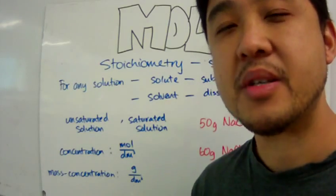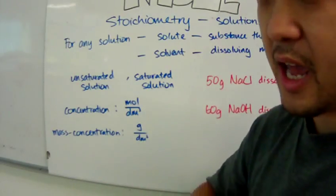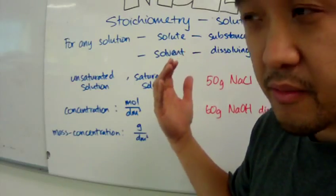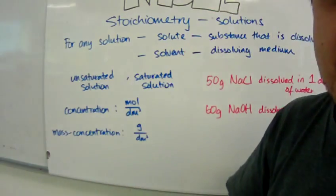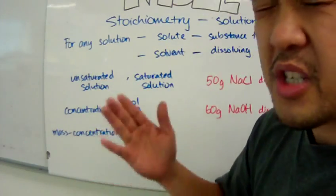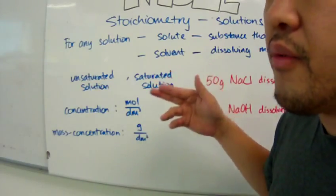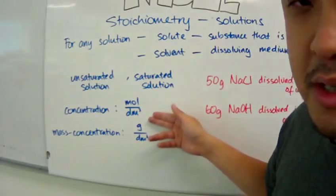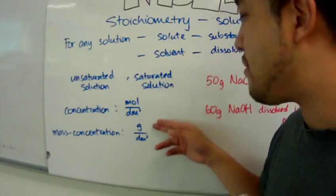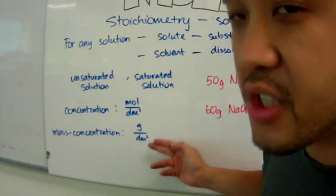For all intents and purposes, what you need to take out of stoichiometry and solutions are these two equations: concentration, which is the moles of the solute divided by the volume of the solvent, and mass concentration, which is the grams of the solute divided by the volume of the solvent.